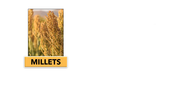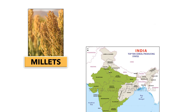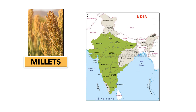Millets include Jowar, Bajra and Ragi. They are grown in Rajasthan, Gujarat, Uttar Pradesh, Maharashtra, Madhya Pradesh, Andhra Pradesh, Tamil Nadu, Telangana and Karnataka.